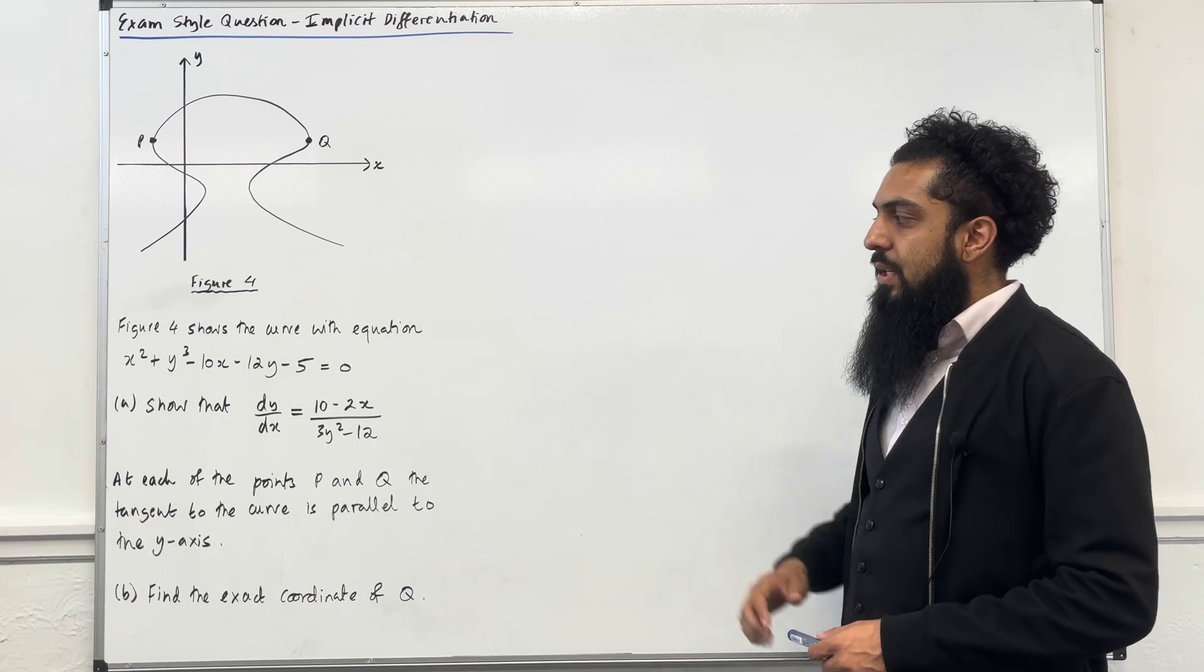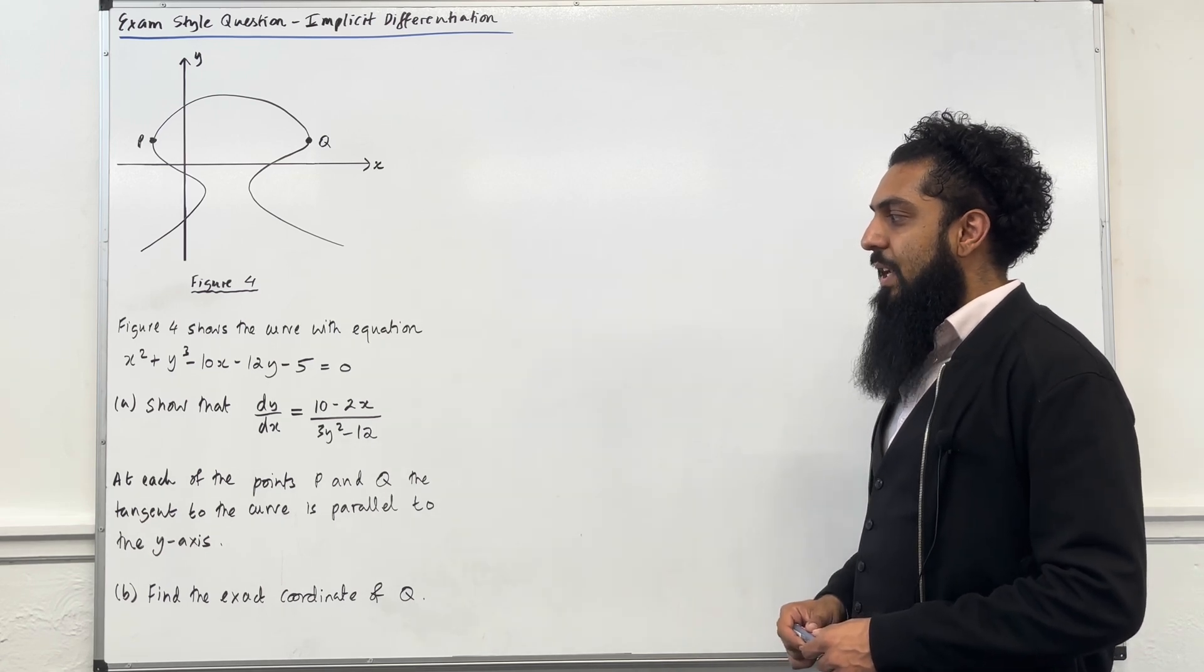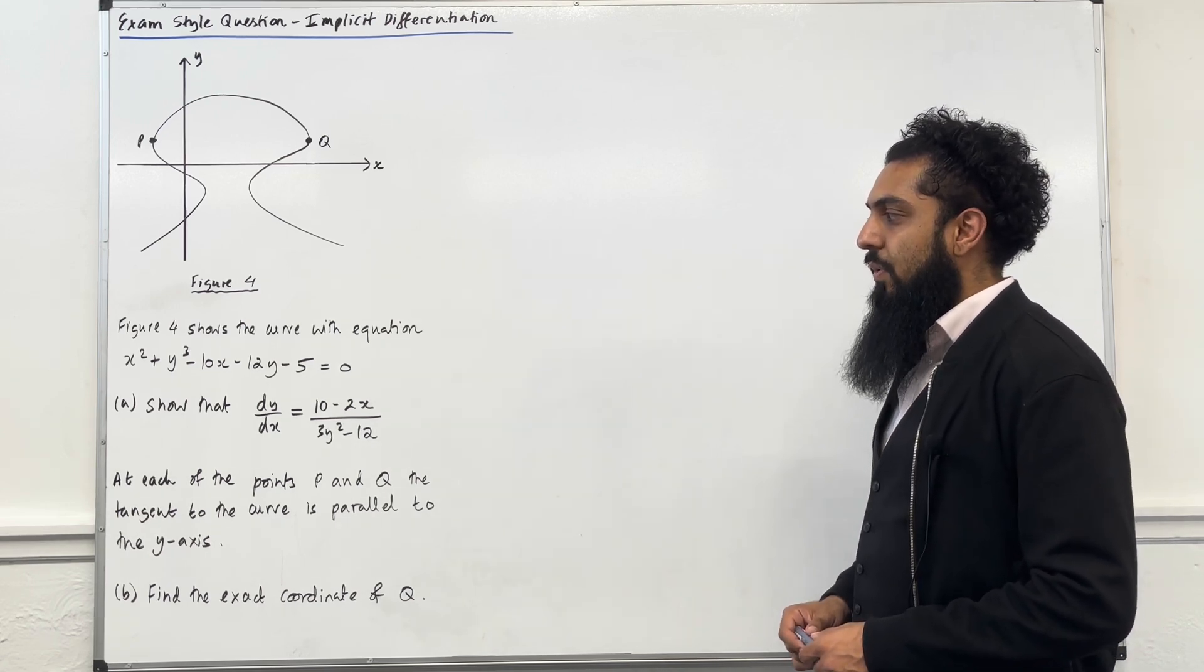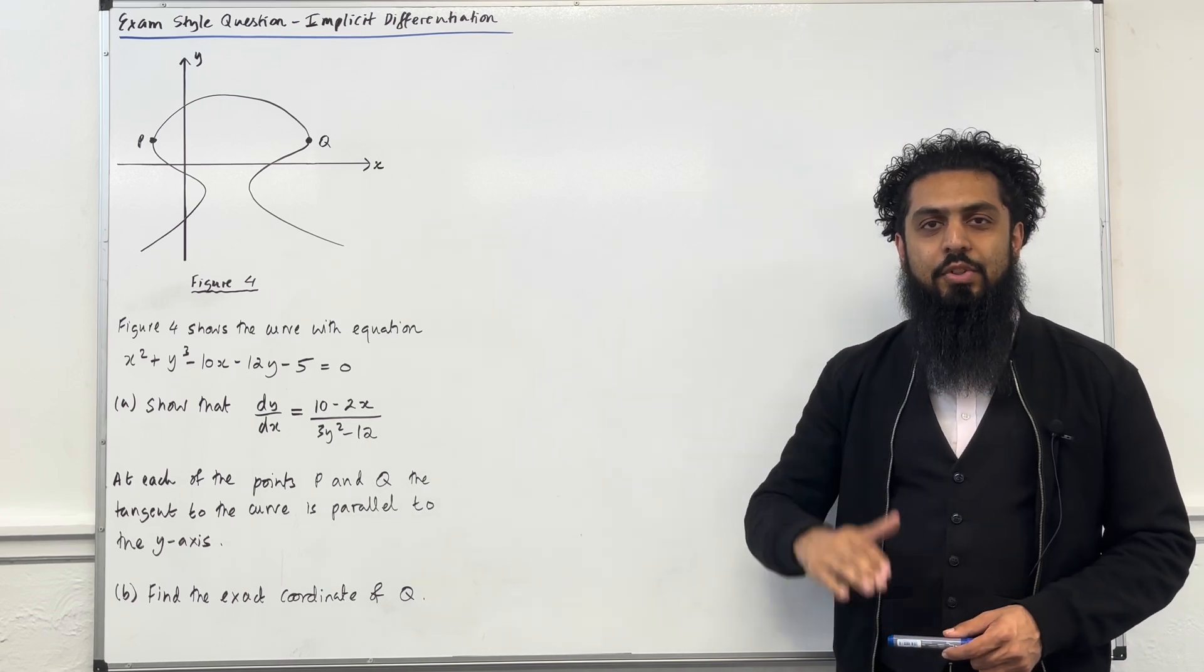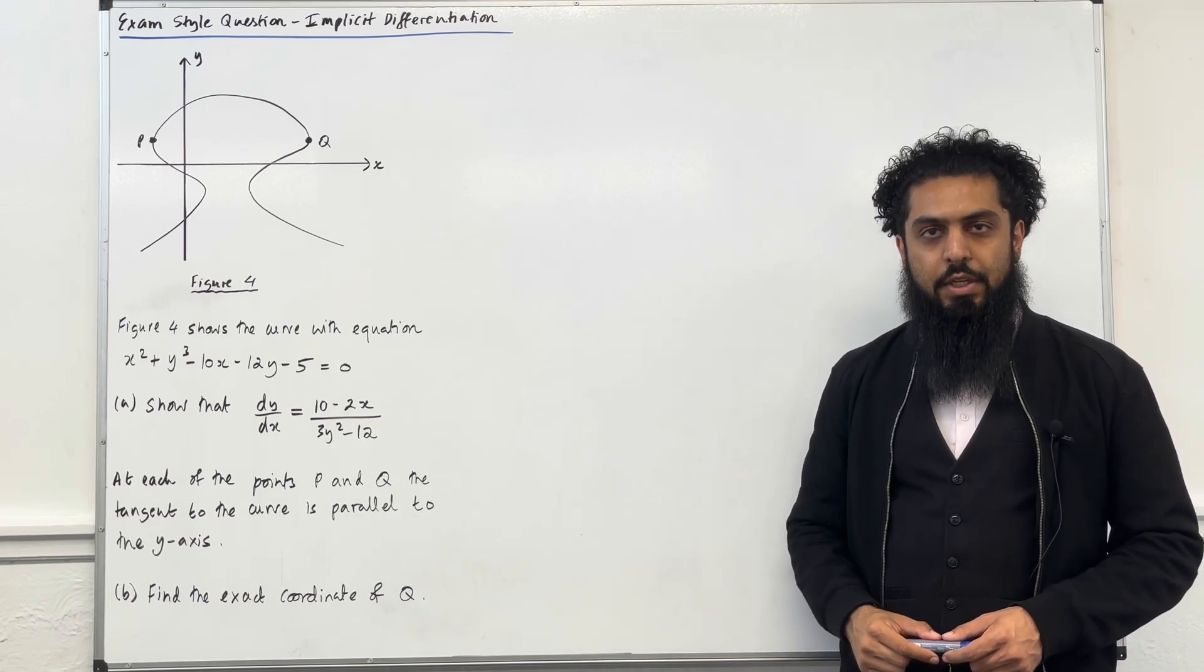Part A shows that dy of dx is equal to 10 minus 2x over 3y squared minus 12. Ladies and gents, please pause the video, have a go at part A and then play the video.